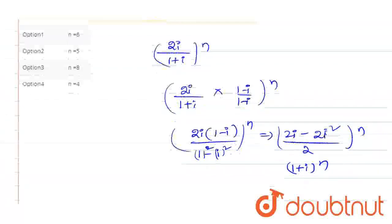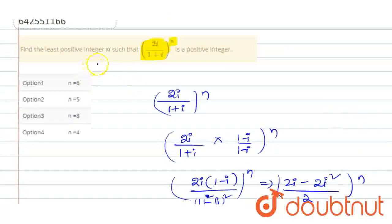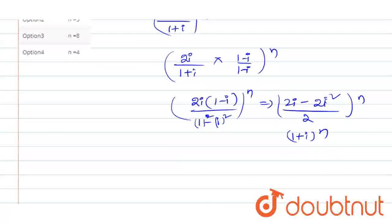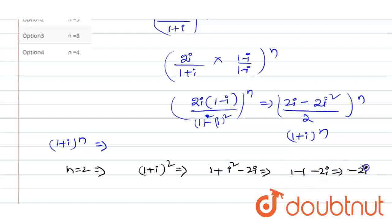So we need to find the least positive integer n. We consider (1+i)^n. For n=2: (1+i)² = 1 + 2i + i² = 1 + 2i - 1 = 2i. That gives minus 2i, which is not a positive integer.